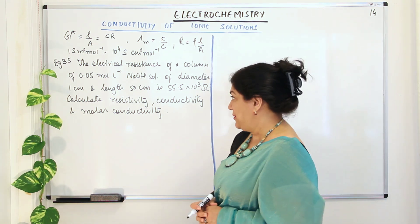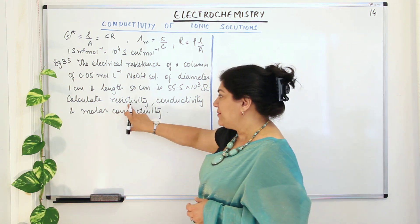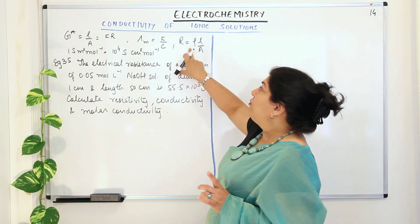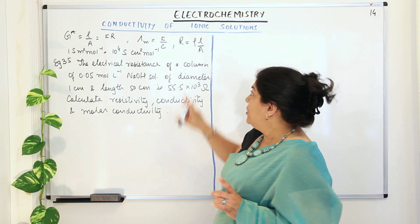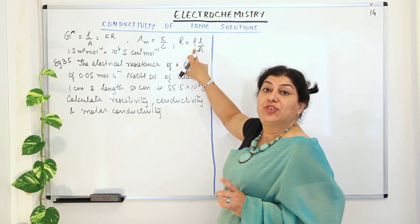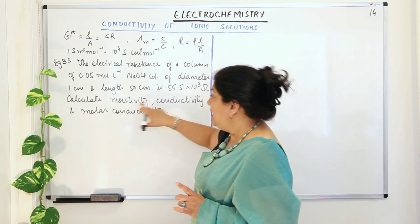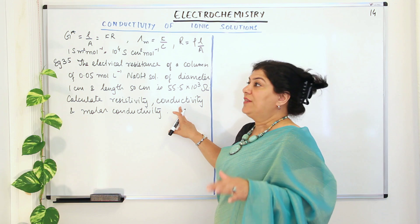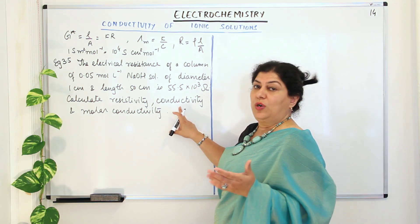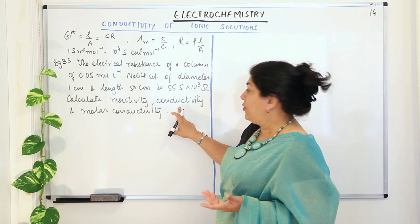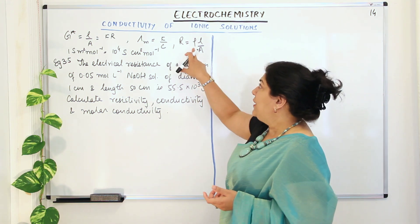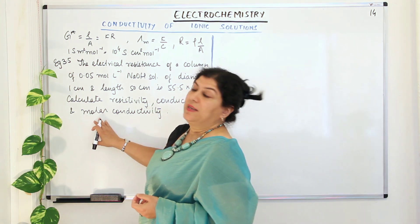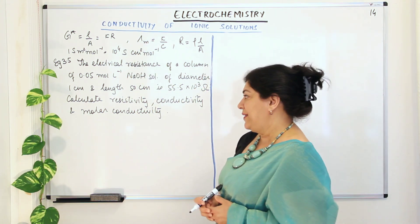You have to calculate resistivity (rho), conductivity (kappa), and molar conductivity (lambda m). We know R = ρ × l / A, so rho = R × A / l. Conductivity kappa = 1/rho. In this question, I will solve the numerical problem using centimeters, to practice both unit systems.